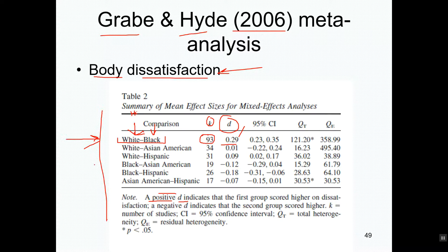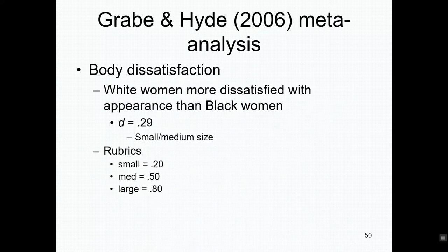Black people see their bodies better or have better body satisfaction than Asian Americans or Hispanic Americans. This is a very powerful statement. When we tie it all together — the Clark doll study and research on how African Americans see their own race and attractiveness — the picture is that black people are pretty happy with the way they look. A small to medium effect size shows white women were more dissatisfied with their appearance.